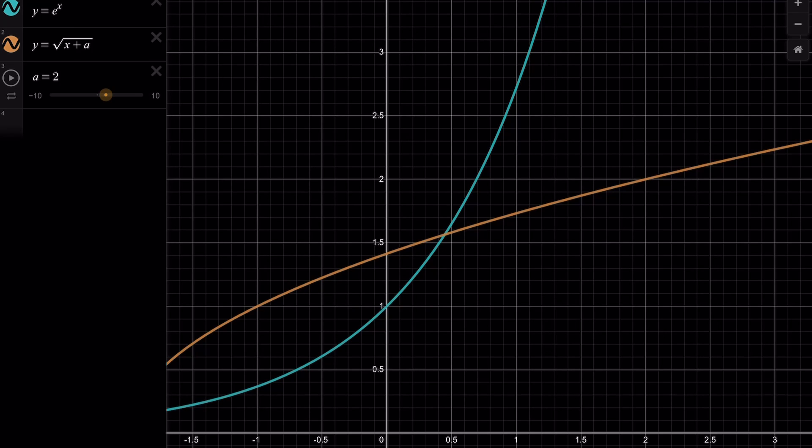But notice that as I change this, the values of a, the graphs are going to get closer. I mean, the radical graph is going to move on the x-axis. You can see where it has an x-intercept. If you set it equal to 0, it's going to be negative a comma 0, right? And for certain values of a, like kind of larger values, larger than a certain value, you get two solutions. They intersect at two points.